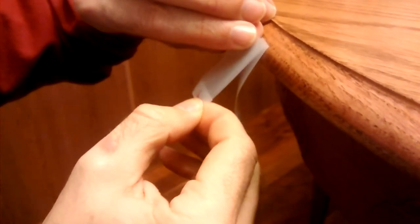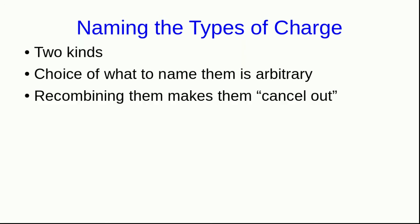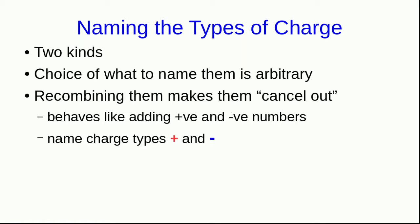If you take a top and a bottom piece of tape and they're both charged and you test that they're both charged and you stick them back together, try not to touch them too much because you don't want to discharge them. What you'll find is that after you've stuck them back together they're not charged. So recombining them seems to make their charges cancel out. Well that means they behave just like adding positive and negative numbers, and so we've chosen to name the charge types plus and minus or positive and negative.